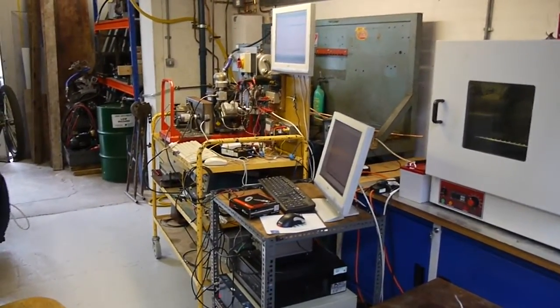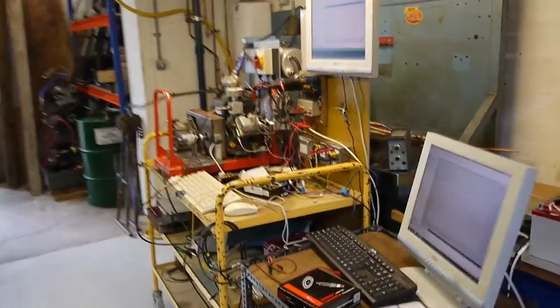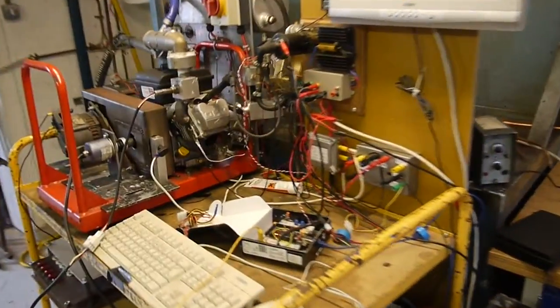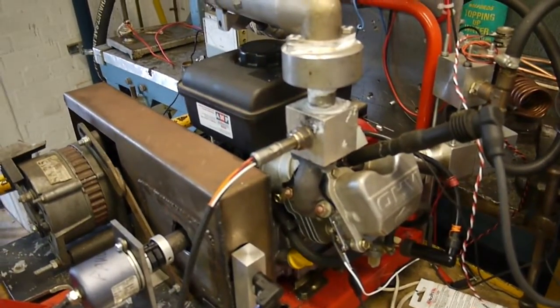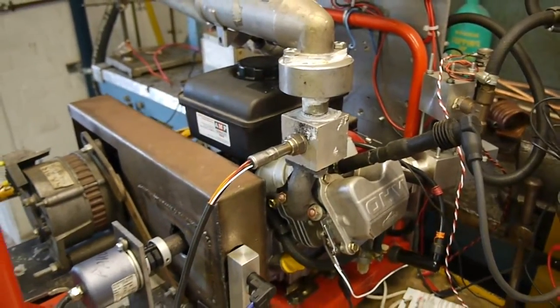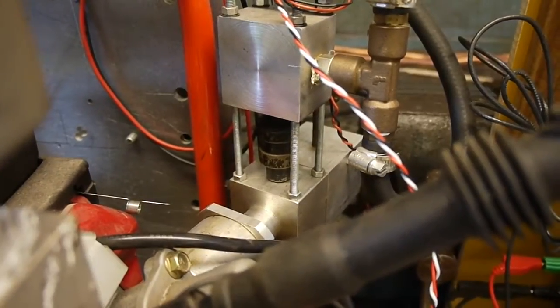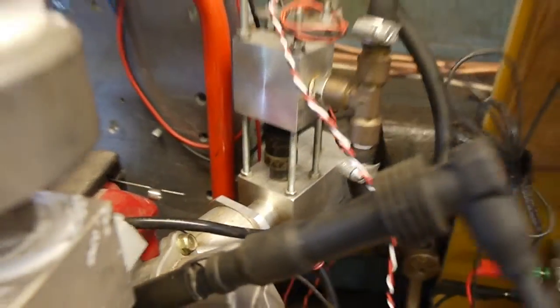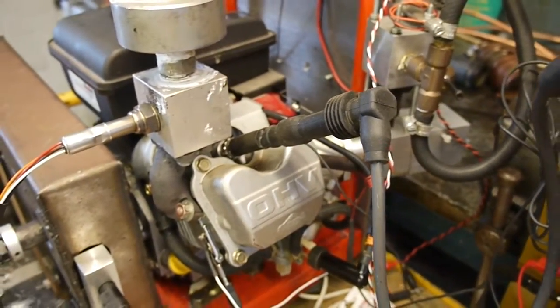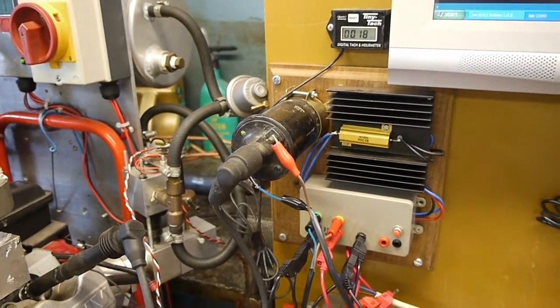Okay, so this is my ECU test bench. We've got an engine here. This is a 2.5 horsepower Briggs & Stratton engine with a fuel injection manifold instead of a carburetor and with electronic ignition instead of a magneto.